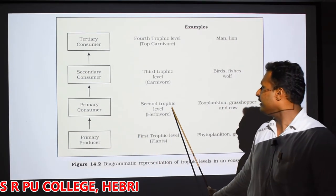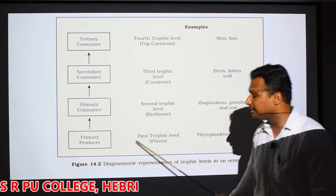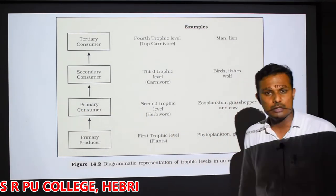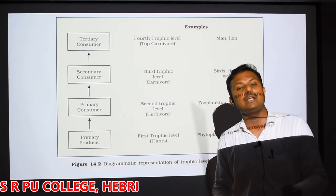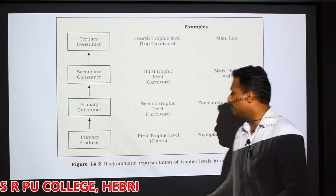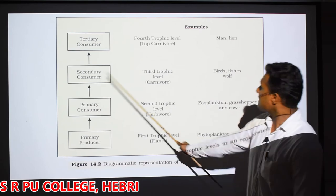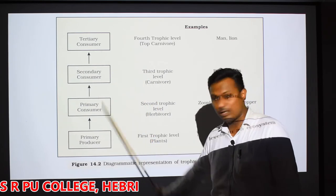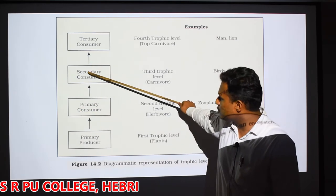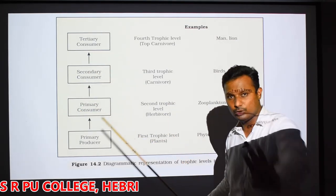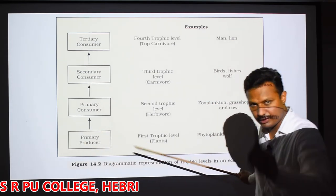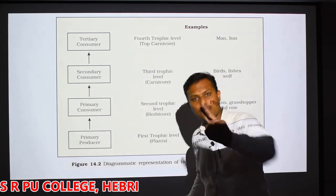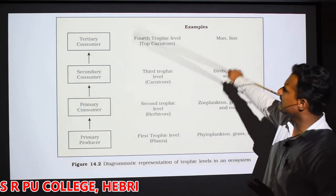Primary consumers form the second trophic level and consist of only herbivores - organisms directly feeding upon plants. This includes zooplanktons, grasshoppers, cows, rabbits, and any animal that is purely vegetarian. Those animals feeding upon primary consumers are at the secondary consumer level, or the third trophic level - these are primary carnivores. This primary carnivore will then be eaten by another animal called a tertiary consumer or secondary carnivore, and similarly quaternary consumers and tertiary carnivores. Some animals like crows and cockroaches are omnivores, feeding on both plants and animals.